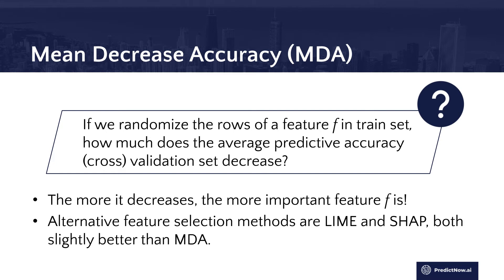But if that feature is really important and you randomize the roles — randomize the mapping between a predictor and its label for a particular sample — you will get a big decrease in accuracy. So the bigger the decrease in accuracy as you randomize this feature variable, the more important it is. That is the gist of MDA. You don't need to know too much about it, but that's the gist of it.